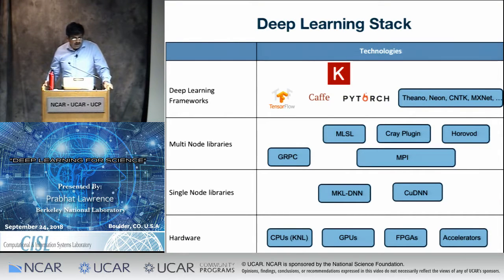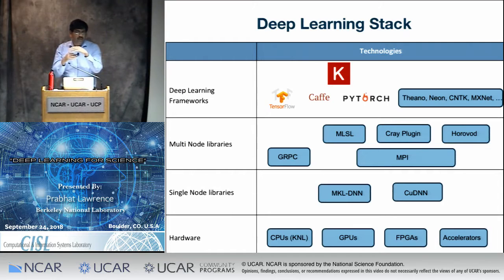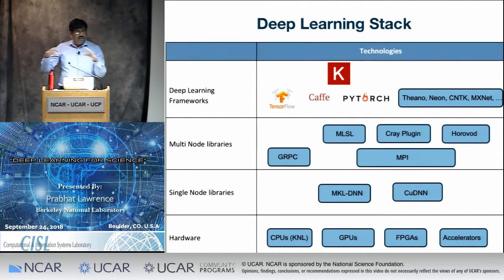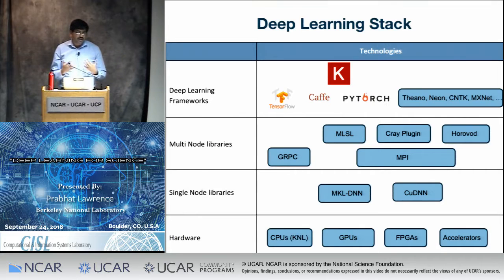For deep learning, we point users to Keras as a higher-level framework — expressing a network in just a few lines of code. For those happy to do low-level hacking, TensorFlow from Google, Caffe from Berkeley, and PyTorch from Facebook are the technologies we point users to. There's a long tail in this space — every other month there's a new deep learning framework — but for now, these four are the ones we support.